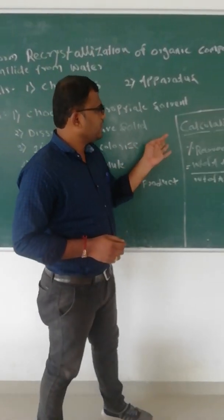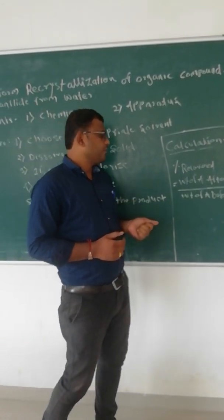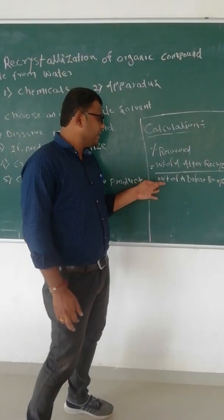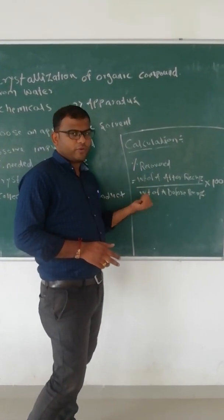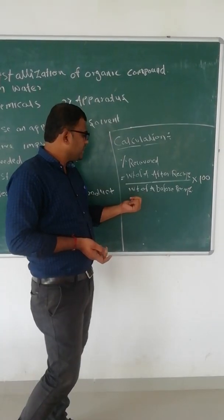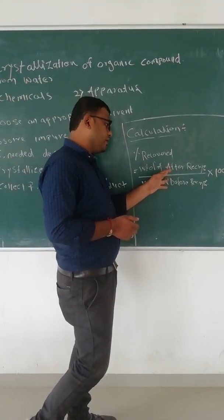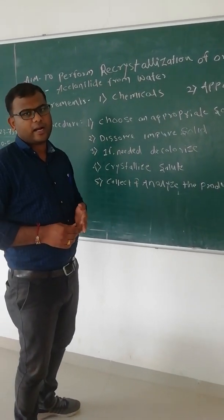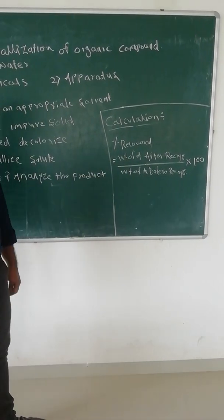Now I will tell you about the calculation part — what is the percent recovery of the compound. For example, here we are taking 4 grams of acetanilide before recrystallization. After recrystallization, suppose you got 3.8 grams. So the calculation is: 3.8 divided by 4, multiplied by 100, gives your percent recovery. You have to write the result: before weight, after weight, and percent recovery.